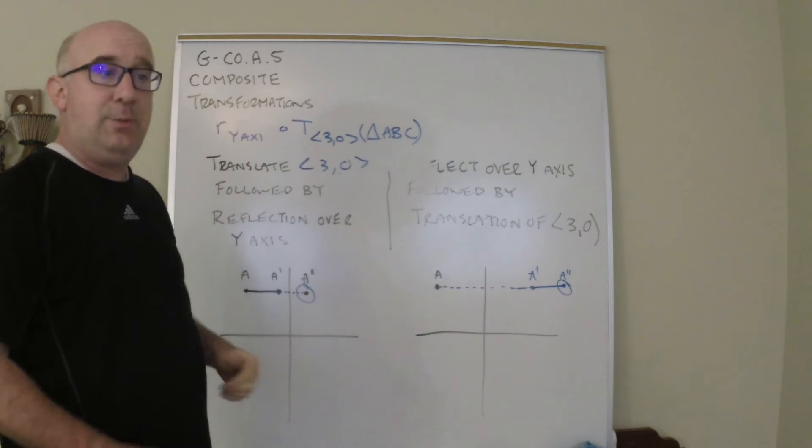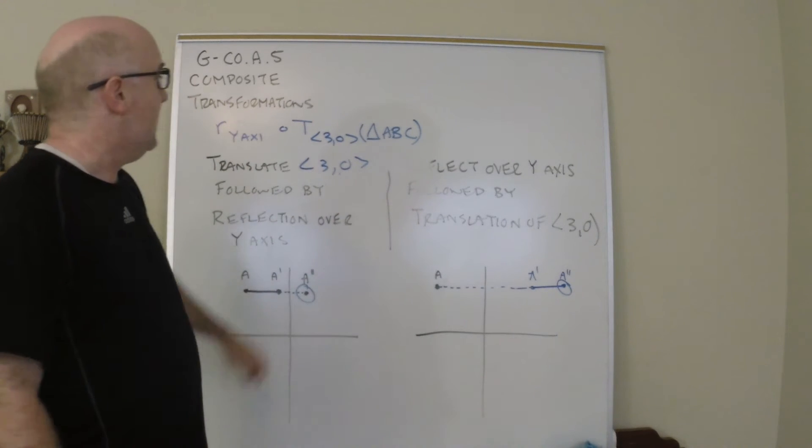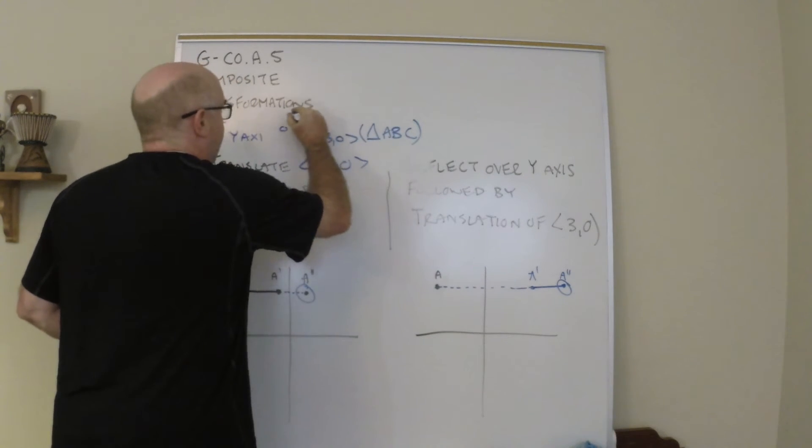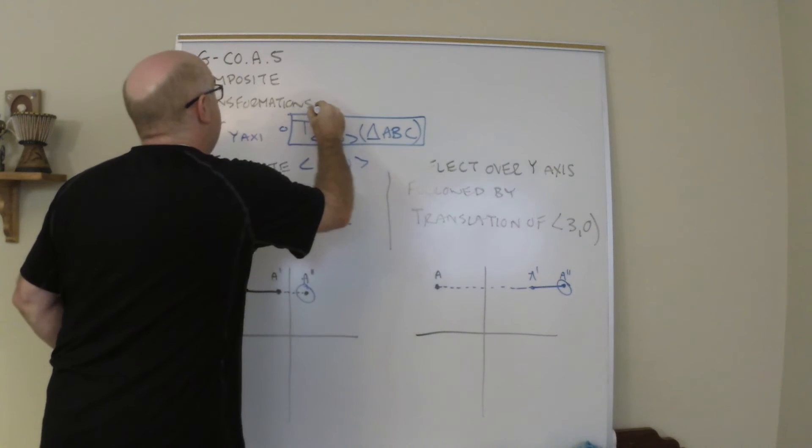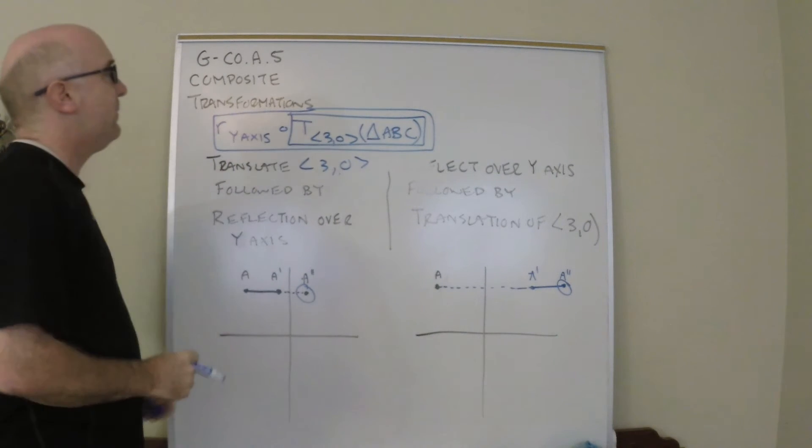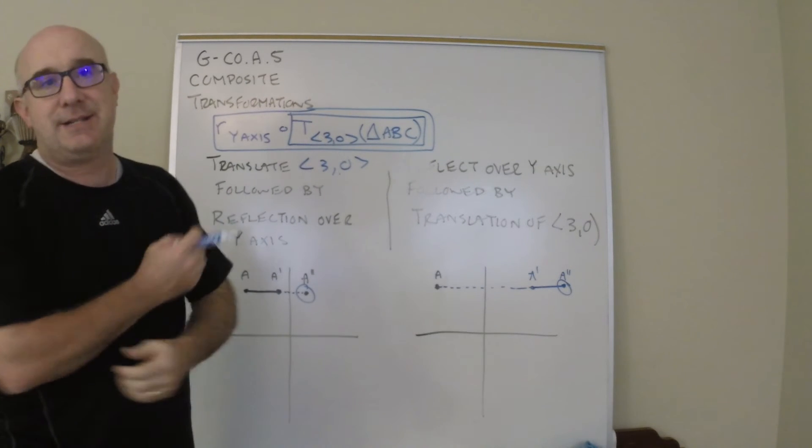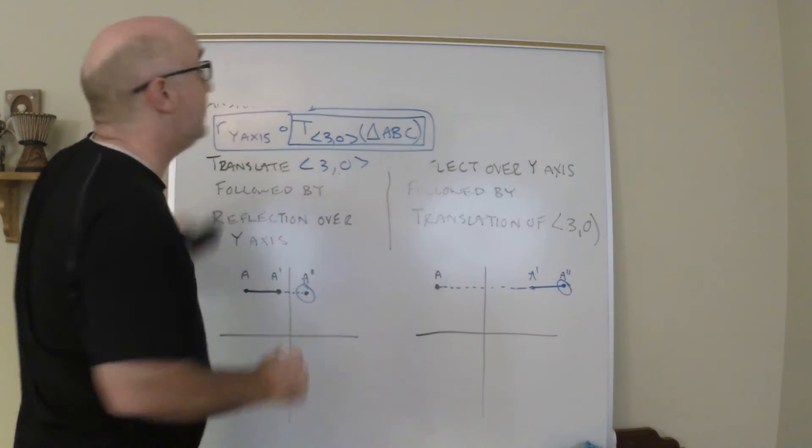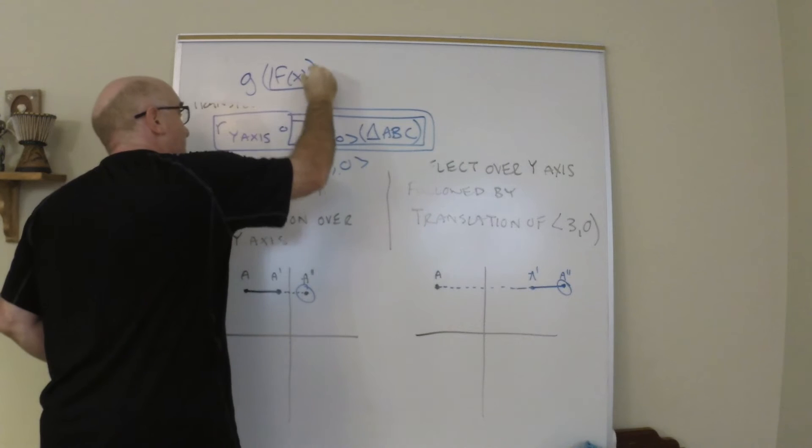So it's very unique the way it's written. Normally we would do the translation first, write it first, then we would do the reflection next, write it next. This is a mathematical sequence that says to triangle ABC, first do the translation and get that result, and then take that result and do the reflection over the y-axis. So notice it's written backwards to the way it's formatted. Now this is similar to our methodology for composite functions. They're written in this manner.